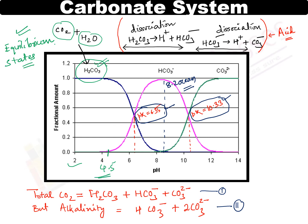The equilibrium constant K reaches 10 to the power minus 6.35. Previously we had 1.5 × 10⁻³; here it reaches 10⁻⁶·³ at 25°C conditions. At this equilibrium constant, bicarbonate ions are 50% present and H₂CO₃ is also 50% present — roughly half and half. So in the pH range from 6.35 to 10.33, this dissociation reaction is occurring where bicarbonate and carbonate ions are both 50% present — this is the intermediate dissociation stage.